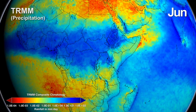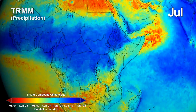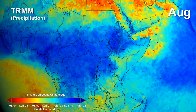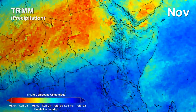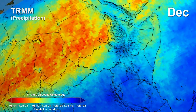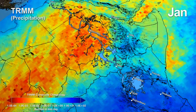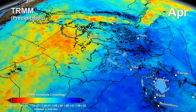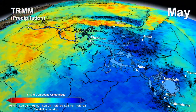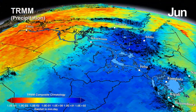NASA research is now bringing unprecedented measurement and monitoring capabilities to the Nile that help scientists, water managers, and policymakers understand changes in the river's water cycle.